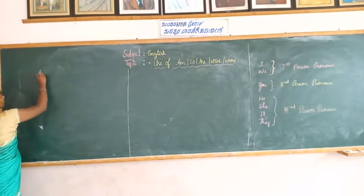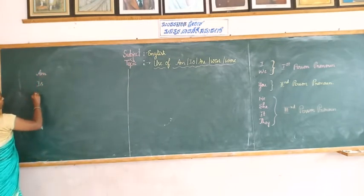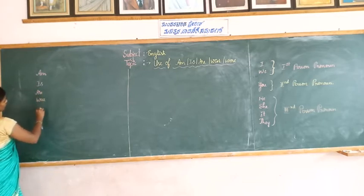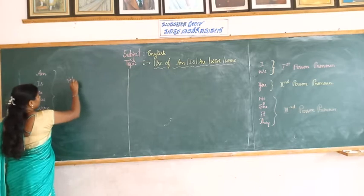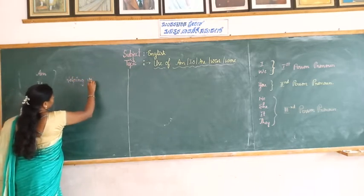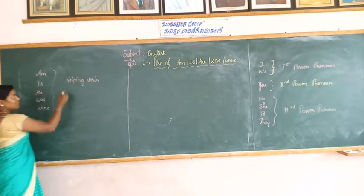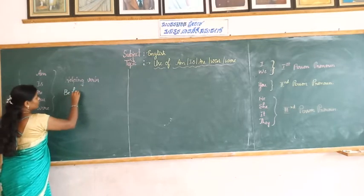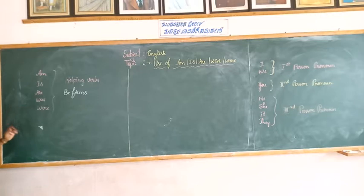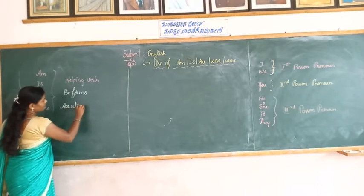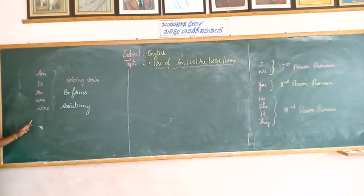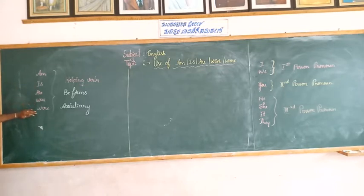Am, is, are, was and were. These are called be forms, also called as auxiliary verbs, also called as helping verbs.